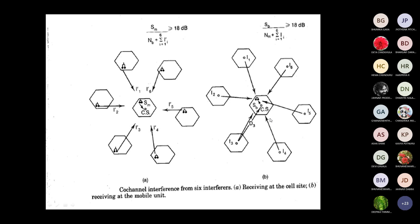For the second case, based upon the cell site, we take six co-channels from the center cell. All base stations from co-channel cells operating at the same frequency send signals to the center cell base station, which finally reach the mobile unit, producing interferences i1, i2, i3, i4, i5, i6 in both conditions — from the mobile unit side and from the cell site side.